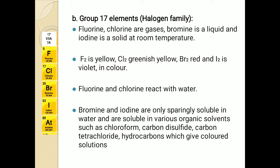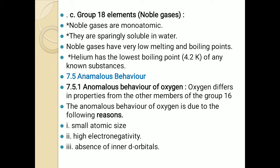Bromine and iodine are more soluble in various organic solvents such as chloroform, carbon disulfide, carbon tetrachloride, or hydrocarbons, giving colored solutions — because all of these elements have color. So these are the physical properties of the 17th group.